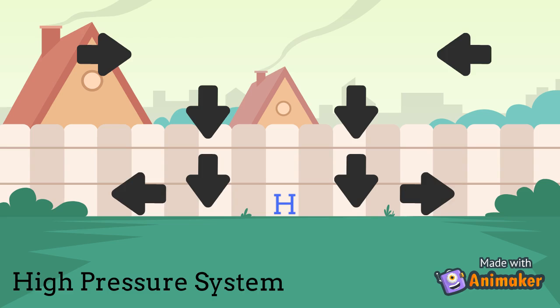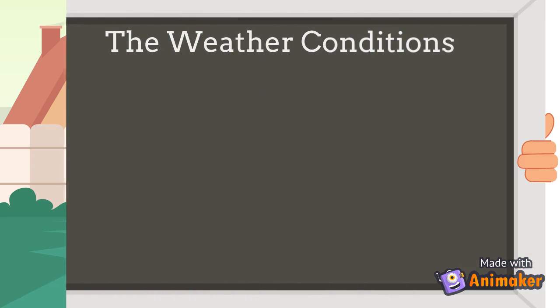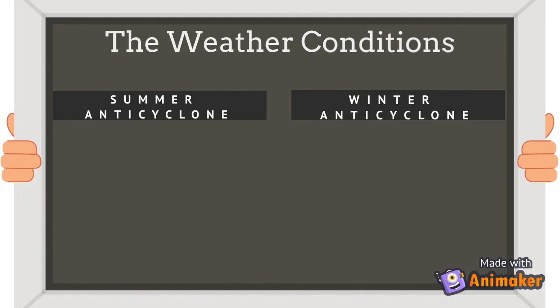The high pressure system brings good weather, or clear skies. This is because the cold air from the atmosphere warms as it moves downward, preventing condensation from occurring. The weather conditions caused by the anti-cyclone would be slightly different in summer and winter.